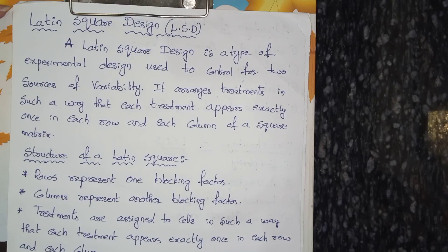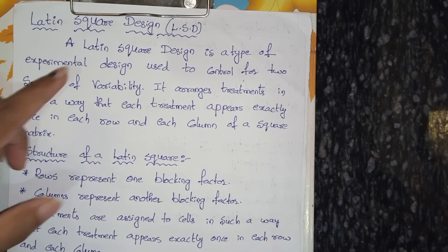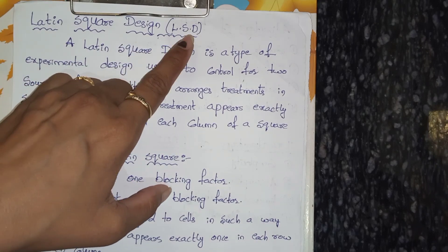Hi students, today I came with one more interesting topic: Latin square design. In a previous video we discussed about CRD, completely randomized design. Now we are going to discuss Latin square design, and one more is randomized block design. These are the three designs in the experimental design topic. In short form, Latin square design is called LSD.